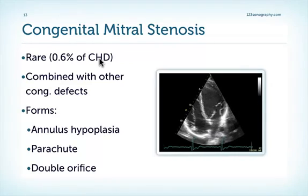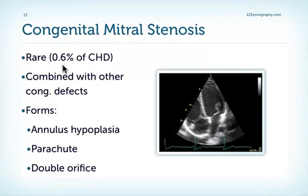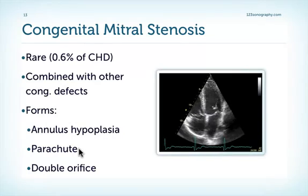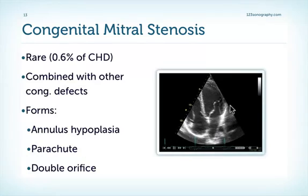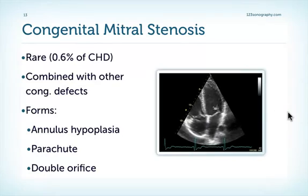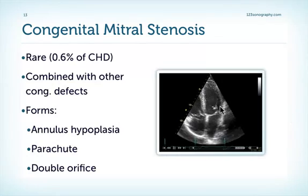The third cause of mitral stenosis is congenital malformations of the mitral valve. They're very rare and usually combined with other defects. Three typical forms are annulus hypoplasia, the parachute mitral valve, and the double orifice mitral valve. Here's an example of a parachute mitral valve, characterized by a unifocal insertion of the mitral valve leaflets. You can see there's a funnel-like stenosis, which is only mild in this case. Patients do not have to have mitral stenosis in parachute mitral valve, and we also see a strange motion of the valve resembling that of a parachute.